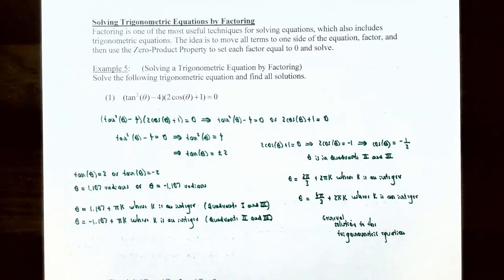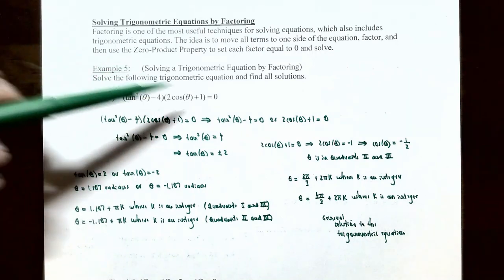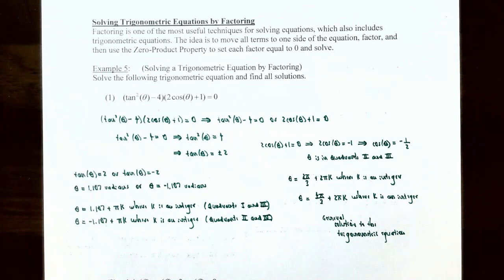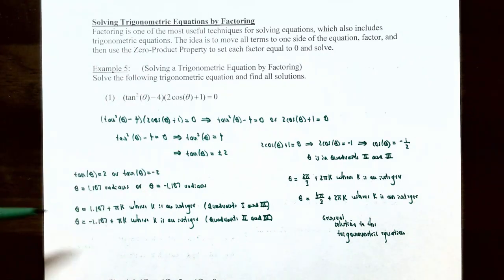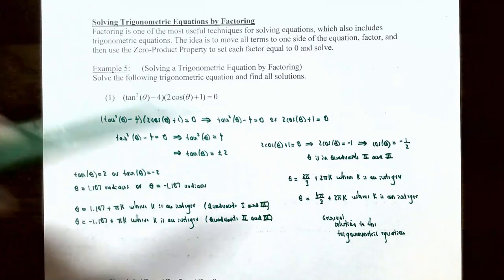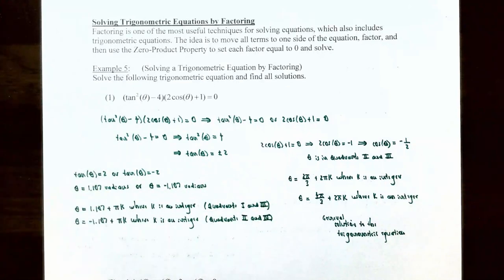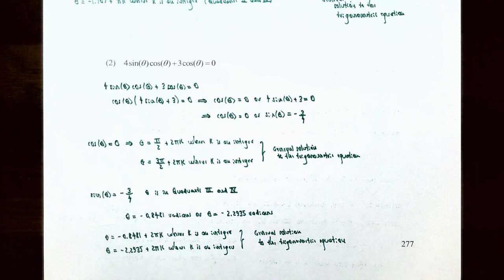So any value for the angle that solves the original equation (tan²θ − 4)(2cosθ + 1) = 0 is one of the following general solutions: θ = 1.107 + πk, θ = −1.107 + πk, θ = 2π/3 + 2πk, or θ = 4π/3 + 2πk, where k is an integer. Let's try one more where we actually have to factor to solve the trigonometric equation.